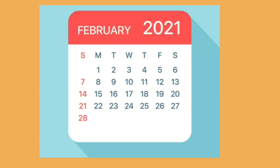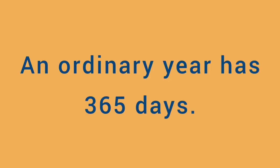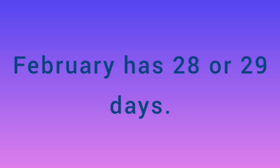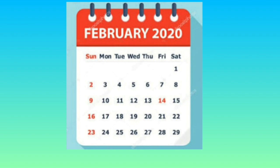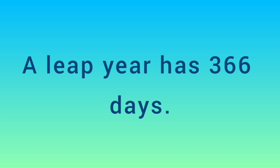February has 28 days. An ordinary year has 365 days. February has 28 or 29 days. The year in which February has 29 days is called a leap year. A leap year comes after every 4 years and has 366 days.